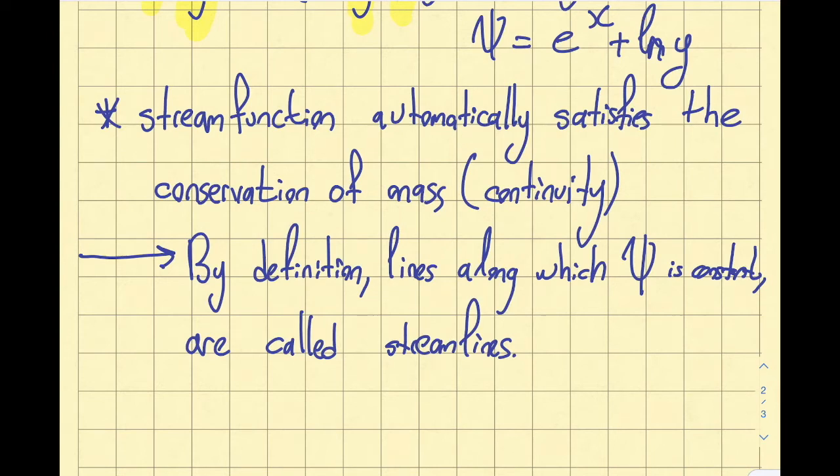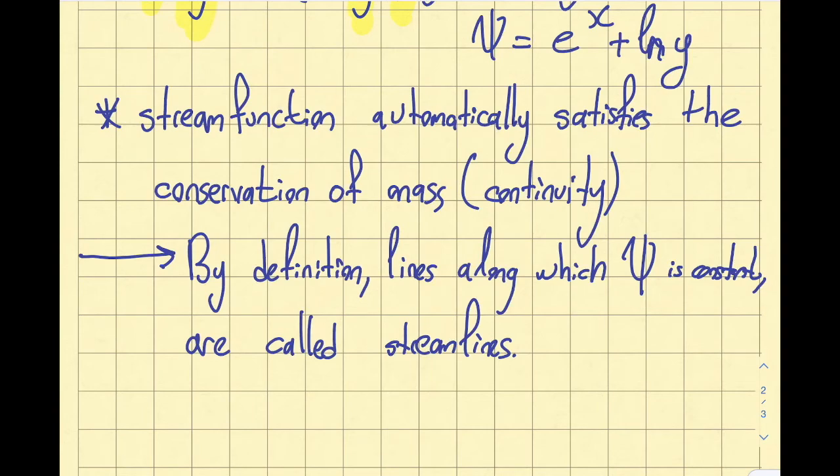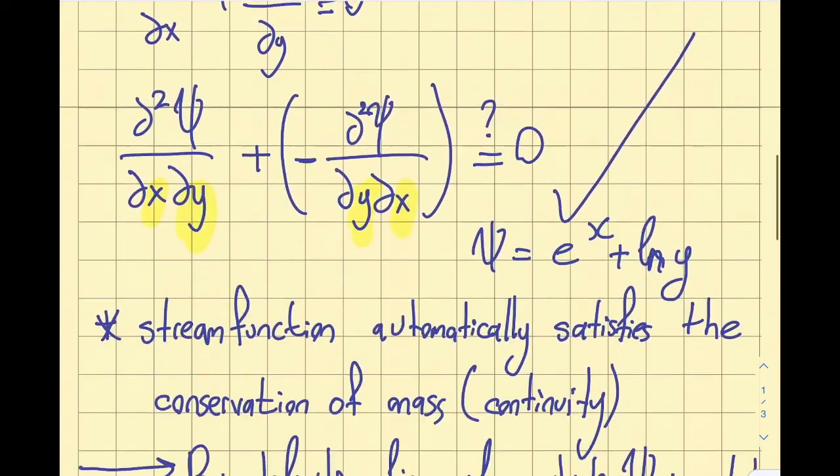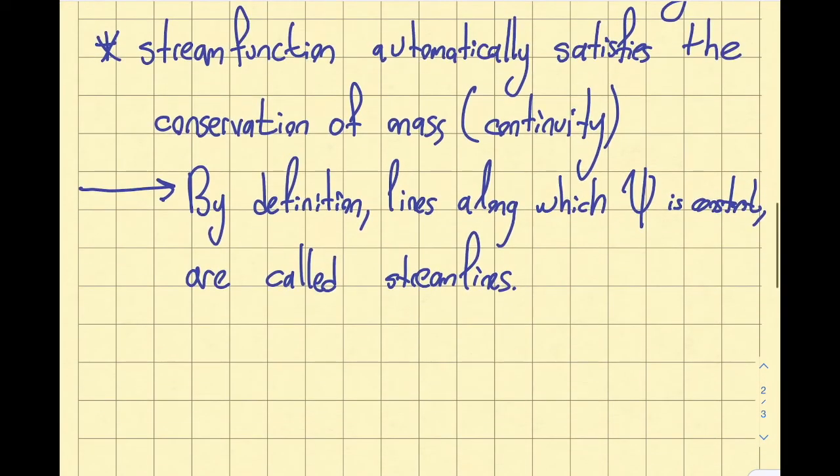The basic relationship is this. By definition, lines along which ψ is constant are called streamlines. Remember that when I first started this topic, the stream function is a function of x, y, and t. What I'm saying here is now it's going to be a constant value, such as 1, 2, 3, 5. Instead of a function, if it's a constant value such as 1, 2, 5, 10, then my stream function becomes a streamline. I will illustrate how this is approached by solving an example for you.